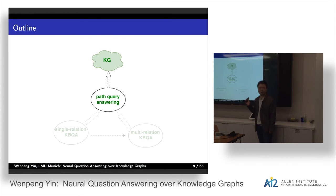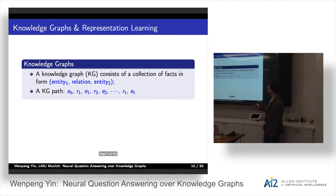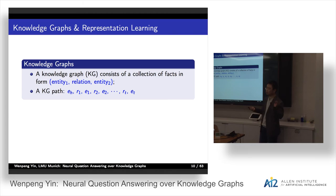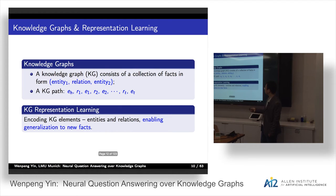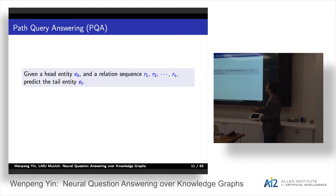Now let's focus on the first part: path query answering. A knowledge graph consists of a collection of facts, like entity1, relation, entity2. A path in the knowledge graph can be denoted as EH and ET — the head entity and tail entity — connected by a knowledge graph path. Knowledge graph representation learning includes knowledge graph elements, entities and relations, enabling generalization to new facts.